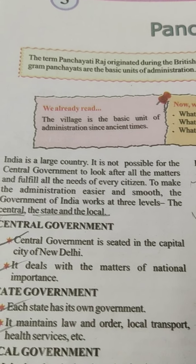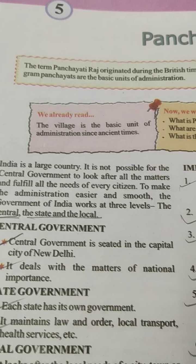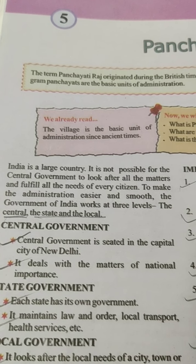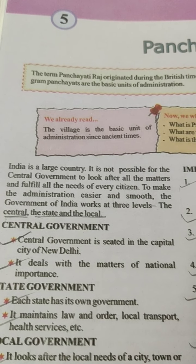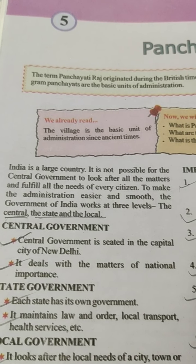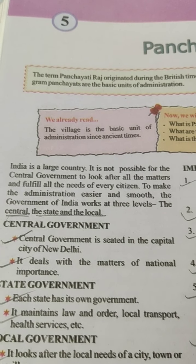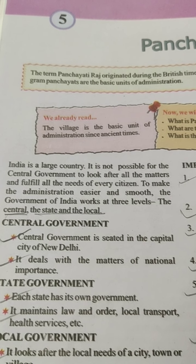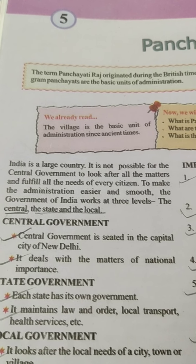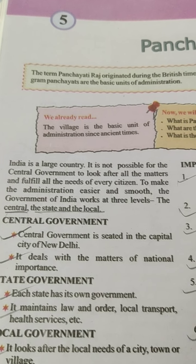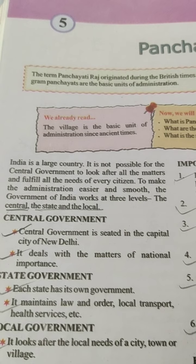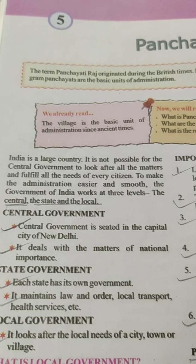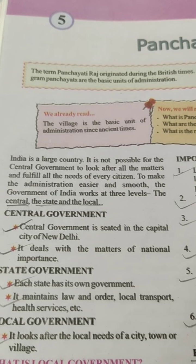India is a large country. It is not possible for the central government to look after all the matters and fulfill all the needs of every citizen. To make the administration easier and smooth, the government of India works at three levels: the central, the state, and the local.